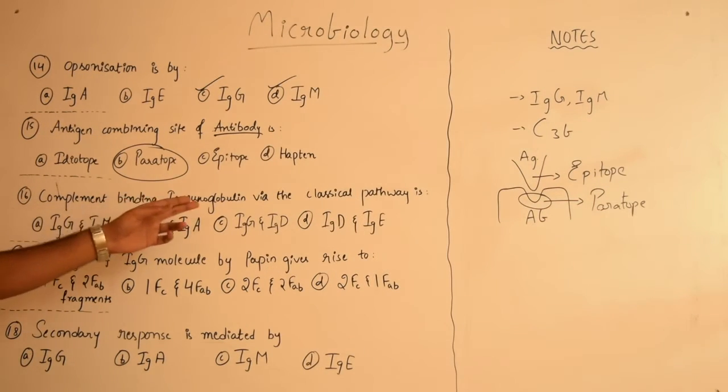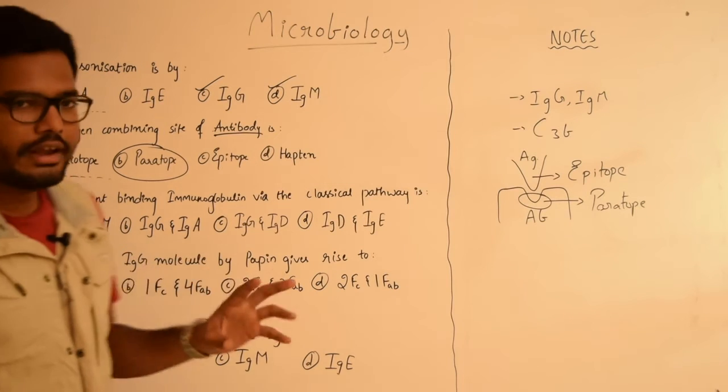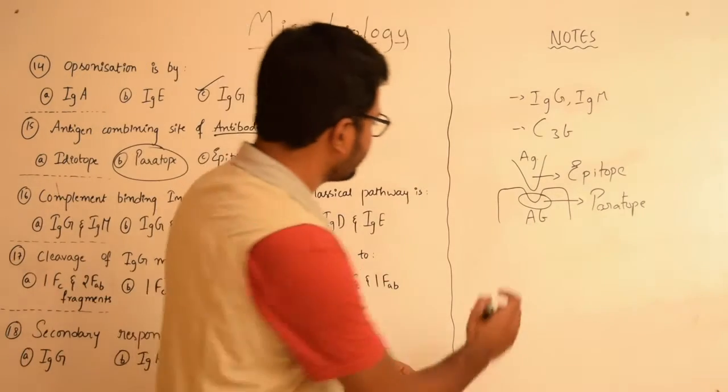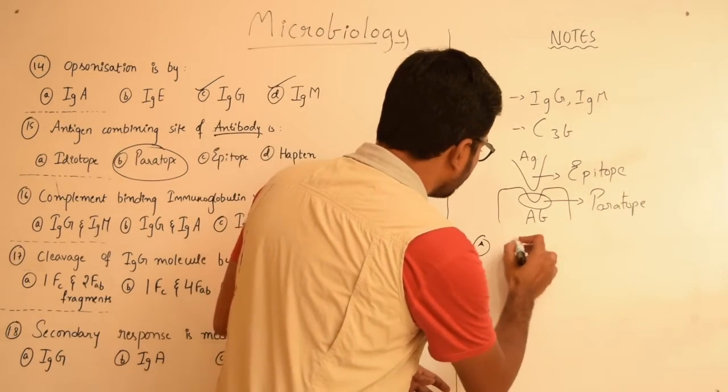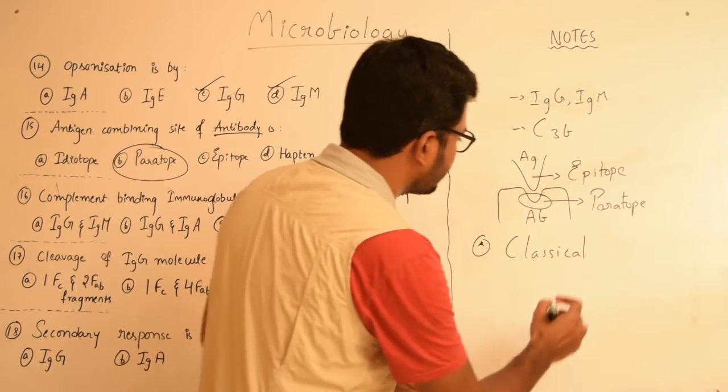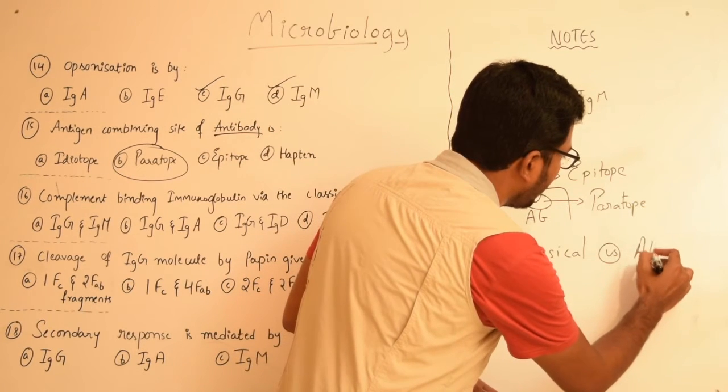Now moving on to the next question: complement binding immunoglobulin via the classical pathway. We have various antibodies given in options. In complement activation there are actually two pathways: one is classical pathway and we have something called alternative pathway.